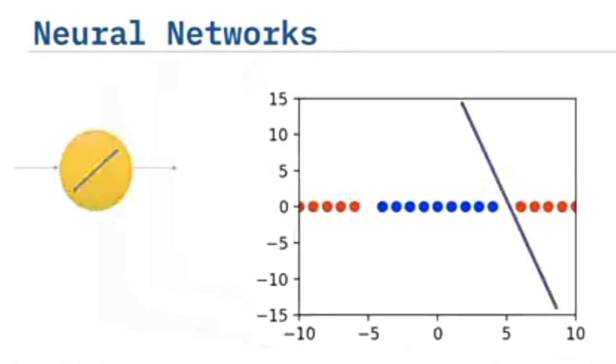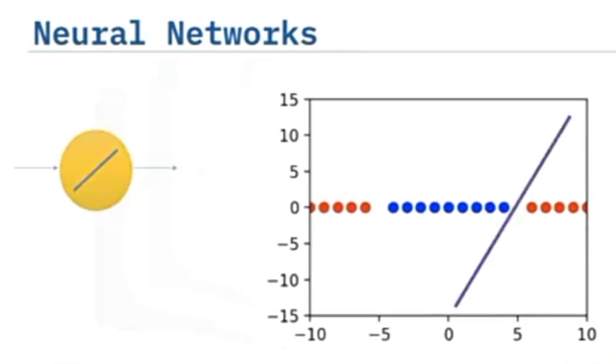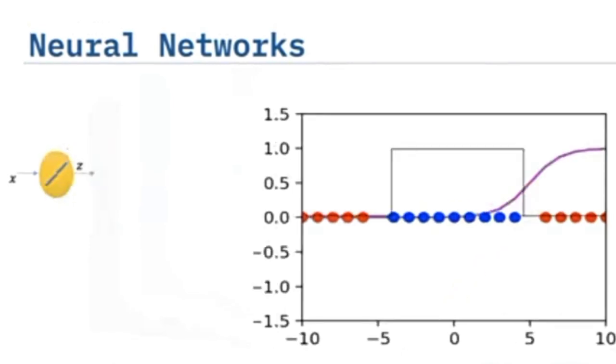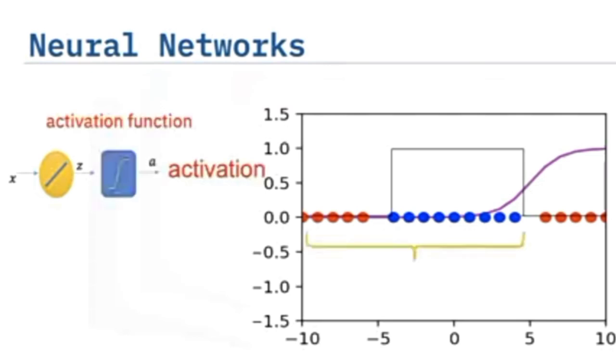The line can also be used to linearly separate some of the data, but some of the data is on the wrong side of the line. This line looks like it could be used to separate the data, but let's see what happens when we apply the sigmoid function. After applying the sigmoid or activation function, we get an incorrect result for some of the samples.